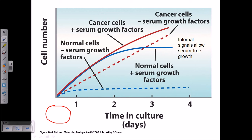For normal cells where we haven't added any growth factor from outside — remember, nutrients are a different thing, required for the survivability of any cell, but growth factors are something we add from outside to enhance the growth of the normal cell. If this is a normal cell without any growth factor in the medium, it will grow for a short time and then reach a stationary phase where no further division occurs. The plate becomes crowded, so division stops. On the x-axis we have time of culture in days, and on the y-axis we have cell number. The number of cells reaches a constant value for normal cells without the addition of serum growth factor.